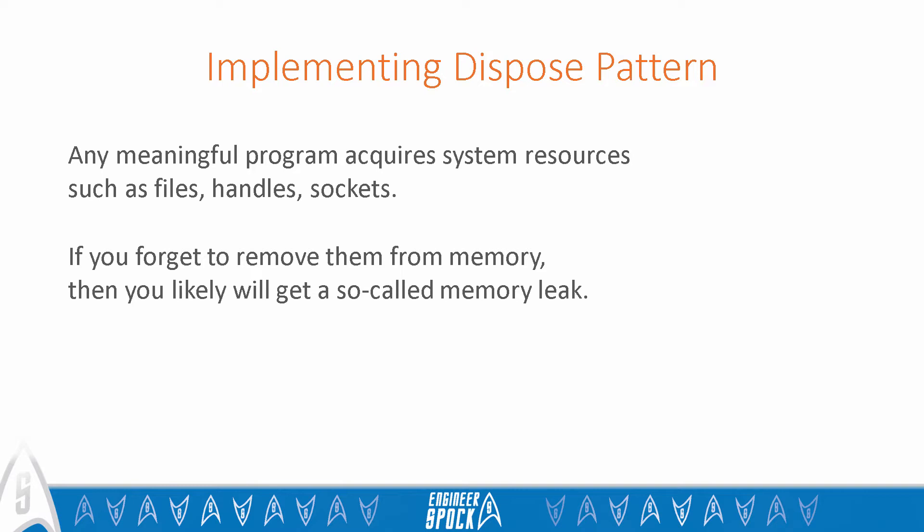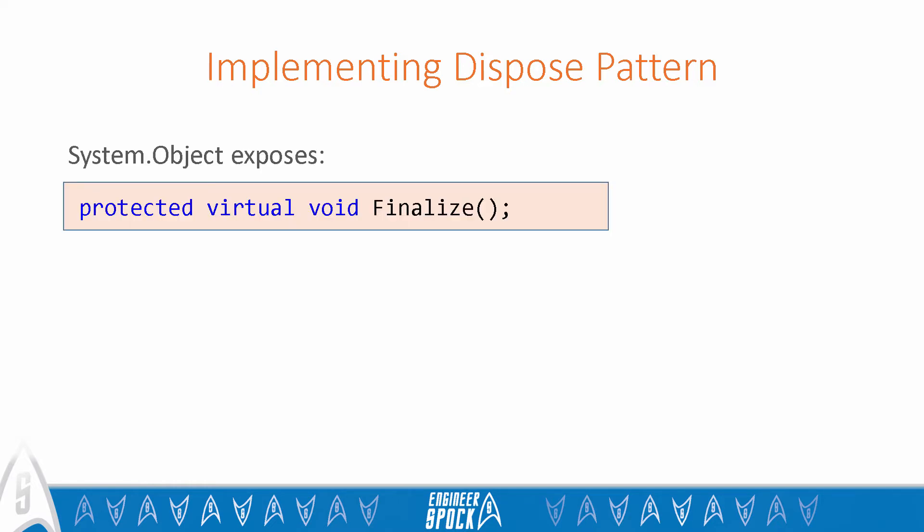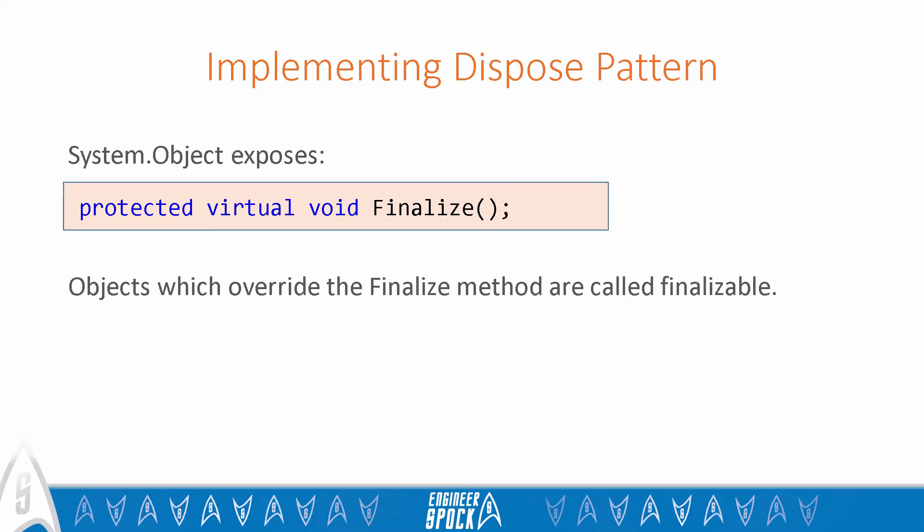The .NET framework provides two capabilities intended to deal with unmanaged resources. Firstly, the System.Object, which is the root for all types in C#, exposes the virtual Finalize method. The GC calls the Finalize method before reclaiming the memory allocated for an object on the heap, and only for objects which override the base Finalize method. Objects which override the Finalize method are called finalizable. GC adds finalizable objects to a special finalization queue, which provides a seam for inserting code that releases unmanaged resources such as IntPtr.